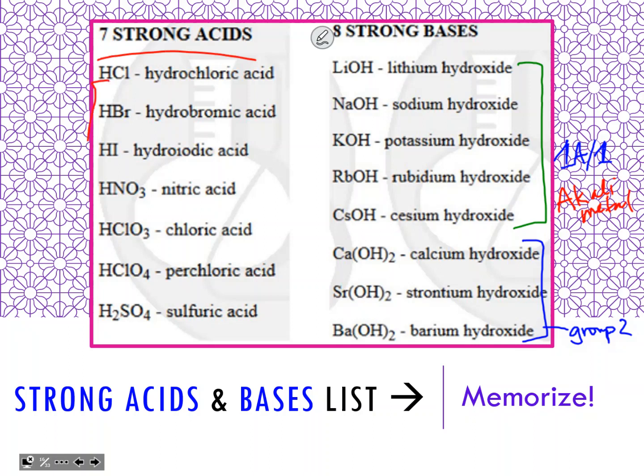The acids are a little harder because there's not really a pattern to them. You have three halogen ones: hydrochloric, hydrobromic, hydroiodic - those follow the halogens. You just have to remember hydrofluoric is not strong, because fluorine is very electronegative - it stays bonded mostly to its H, holds on to it, doesn't let it ionize. So out of the halogen acids, hydrofluoric is the only weak one.